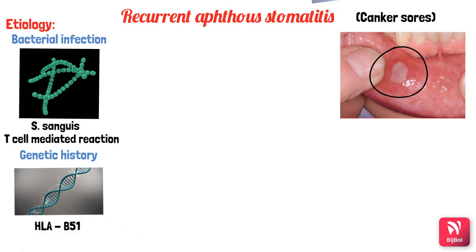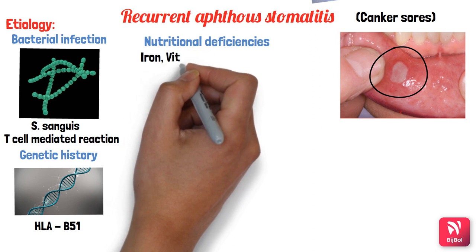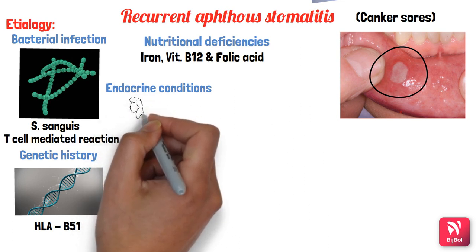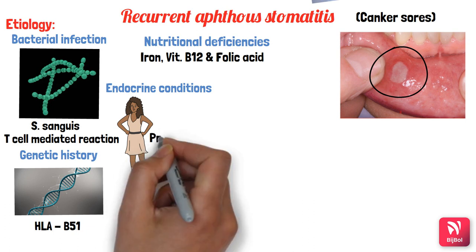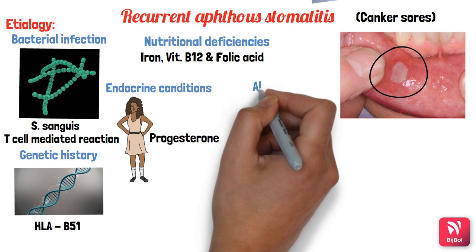Next is genetic history, where there is a positive family history involving the HLA-B51 gene. Sometimes there can be nutritional deficiencies like iron deficiency, vitamin B12 deficiency, and folic acid deficiency, but studies suggest these act as synergistic rather than primary causes. Endocrine conditions also play a role — recurrent aphthous stomatitis is most commonly seen in females during the menstrual, premenstrual, or post-ovulation period, and aphthous ulcer formation is directly proportional to blood progesterone levels.